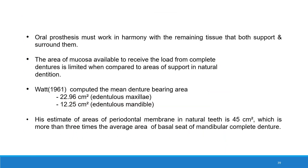Prosthodontic consideration. Oral prostheses must work in harmony with the remaining tissue that supports and surrounds them. The area of oral mucosa available to receive load from a complete denture is limited compared to natural dentition. The mean denture-bearing area has been computed as 22.96 cm² in the edentulous maxilla and 12.25 cm² in the edentulous mandible.